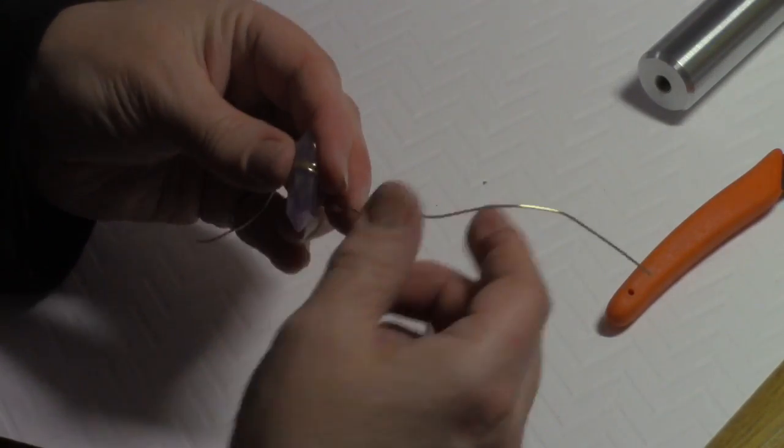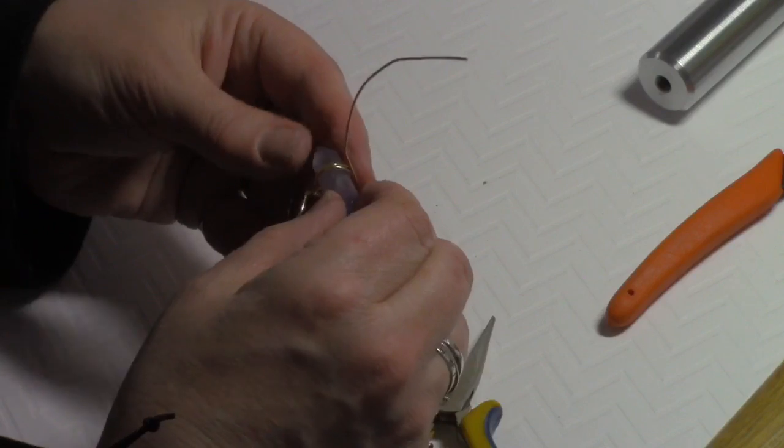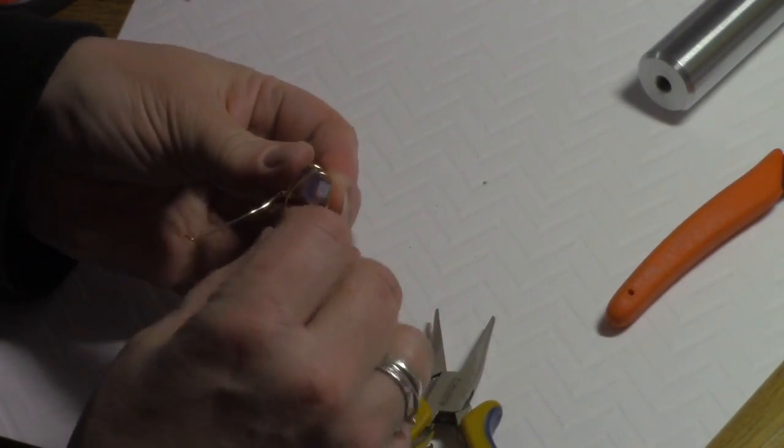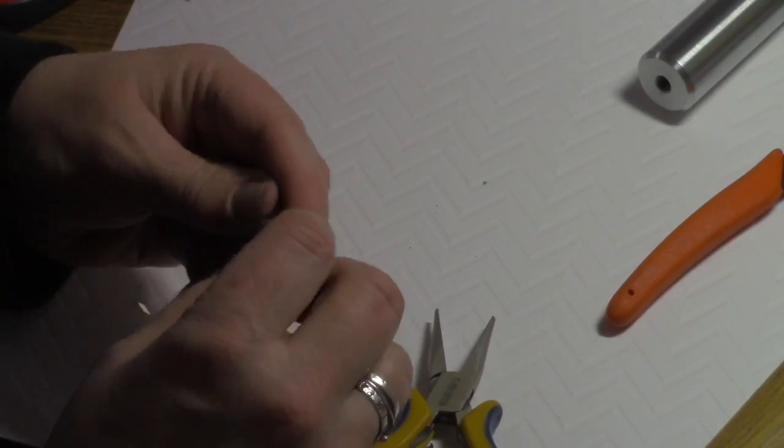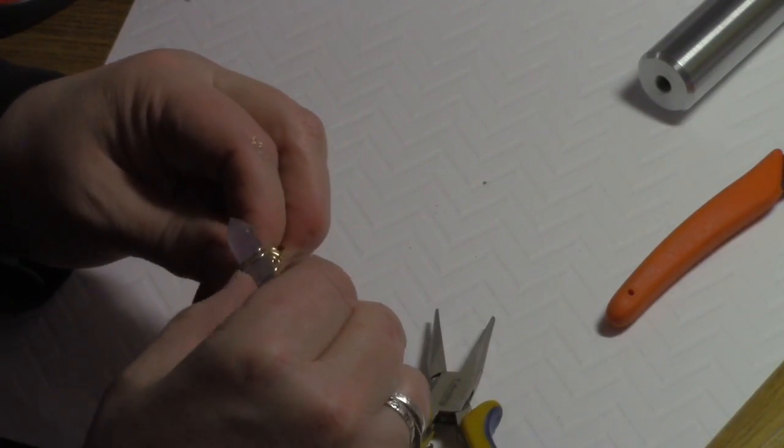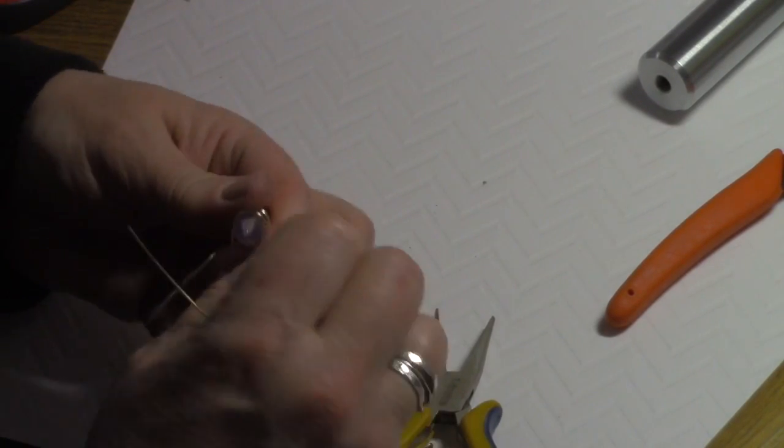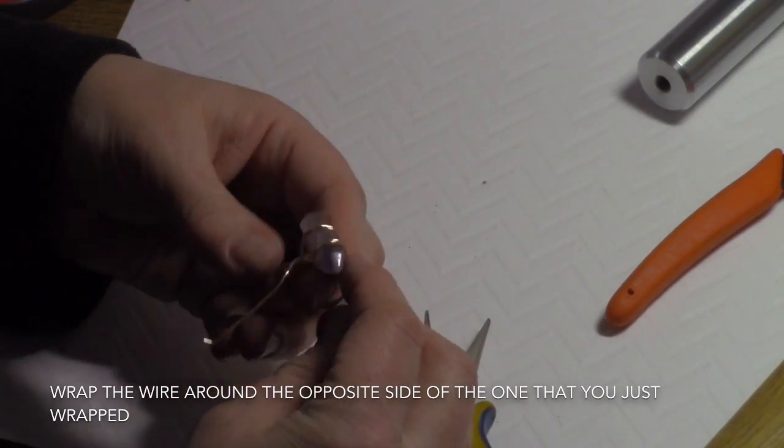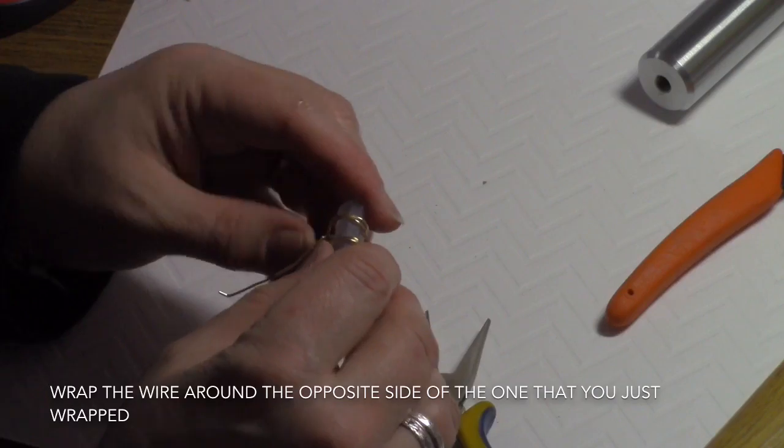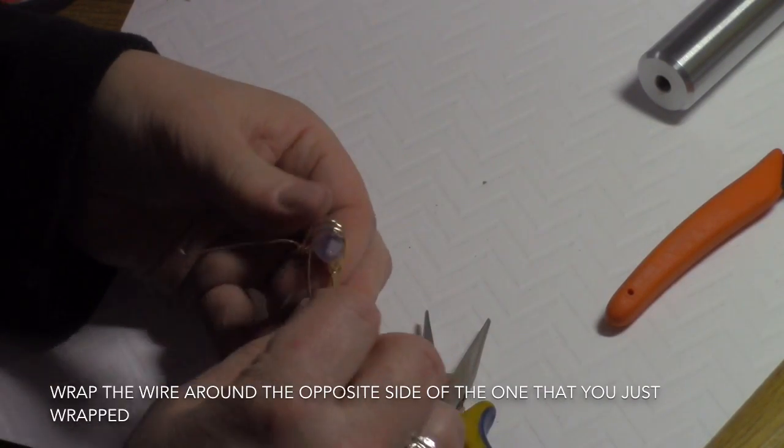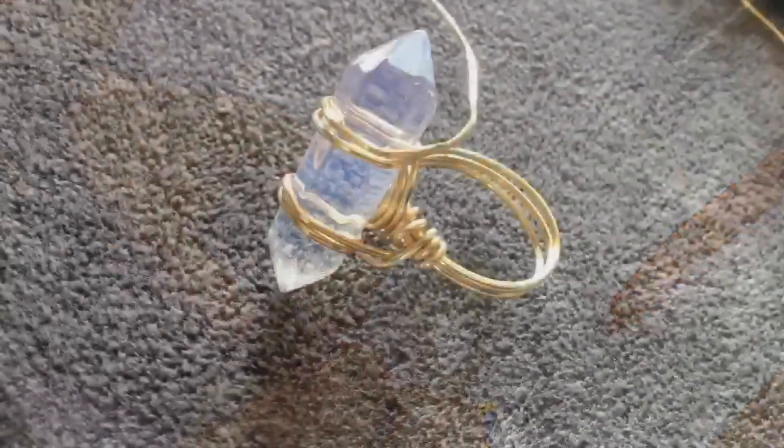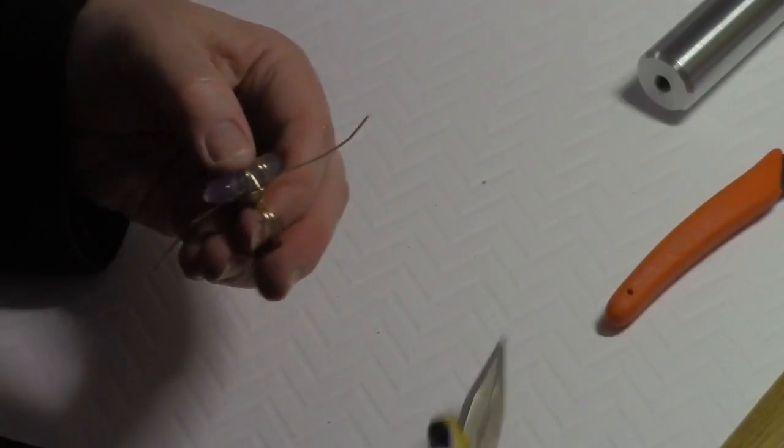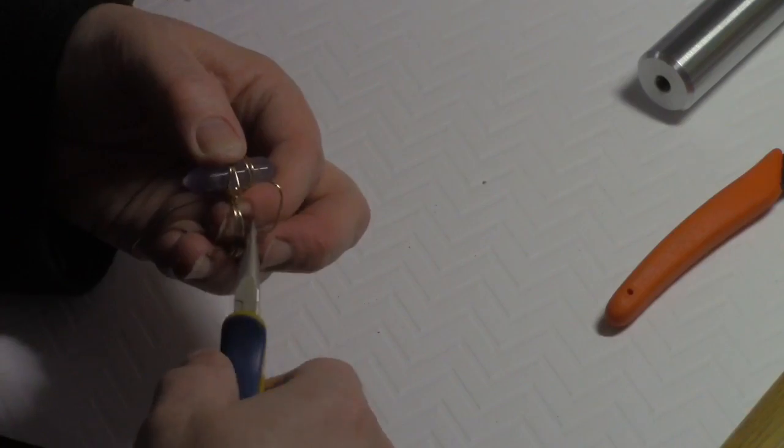So that's what you have so far. And I'm still holding it in place because it's not quite stable yet. So the next thing you're going to do is just do the exact same thing on the other end. So just nice and tight. You're just going to want to pull it as taut as you can. So this is what you would have.